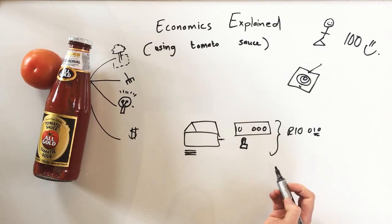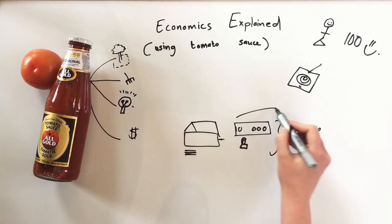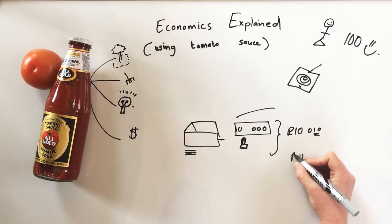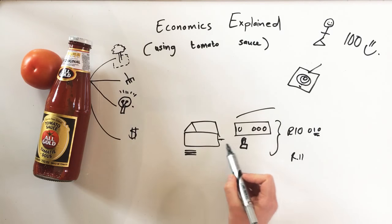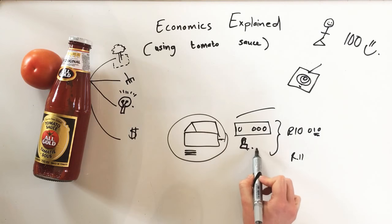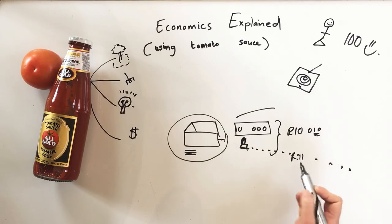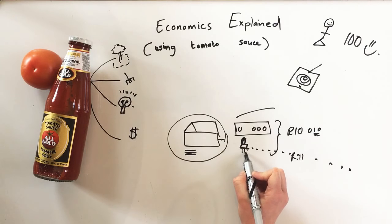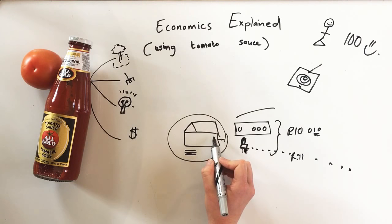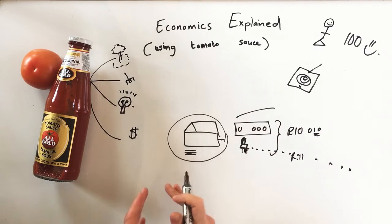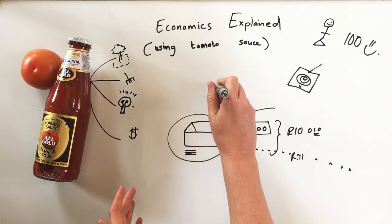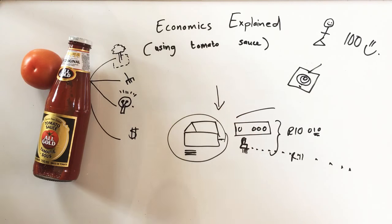Because somebody has to pay for the factory, and the more bottles of tomato sauce you produce, the less each new bottle of tomato sauce has to cover the factory cost. So that is economies of scale—the more you produce, the more your fixed cost of the factory goes down.